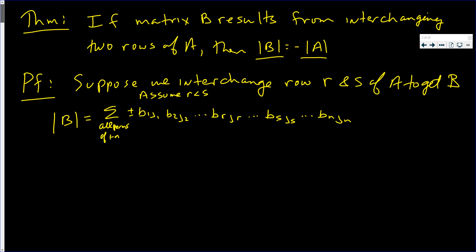The plus or minus sign comes from the number of inversions we have on the column values. If we have an even number of inversions we have a plus sign; if we have an odd number of inversions we have a negative sign.